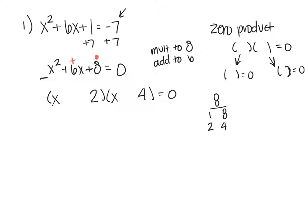Now let's look at my signs. I want to multiply a positive number and add to a positive number, so the only way to do that is positive, positive. Check these by FOIL.